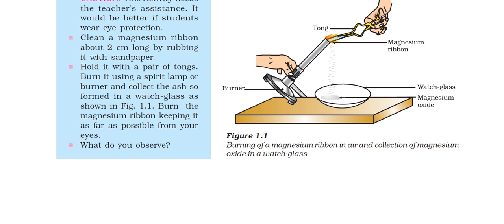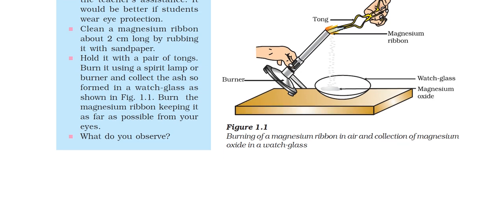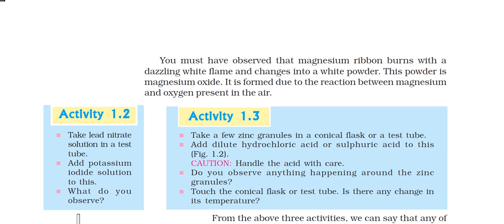You can see in the figure that we burned the magnesium ribbon, and a collection of magnesium oxide forms — the ash is collected in a watch glass. You will observe that the magnesium ribbon burns with a dazzling white flame and changes into a white powder. This white powder is magnesium oxide, formed because magnesium reacts with oxygen present in the air.